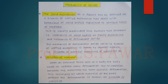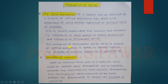Now, what is mechanics of solid? Solid mechanics as a subject may be defined as the branch of applied mechanics that deals with the behavior of solid bodies subjected to various types of loading. It is usually subdivided into mechanics of rigid bodies and mechanics of deformable bodies. We are going to study mechanics of deformable bodies, which is also known as strength of material or mechanics of solid.